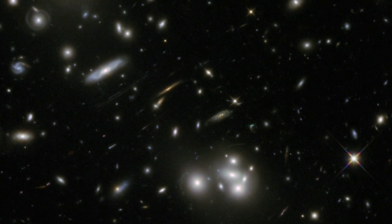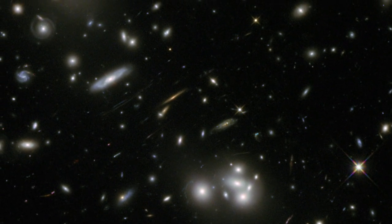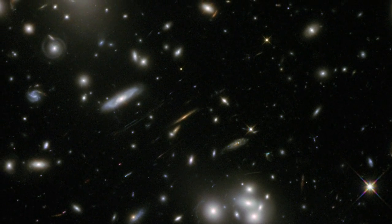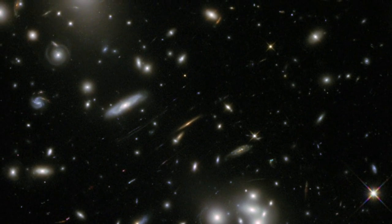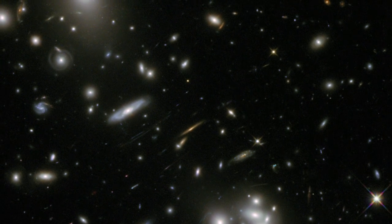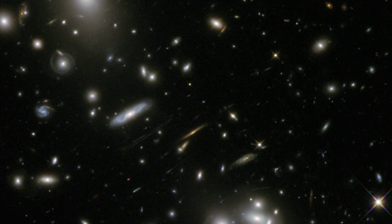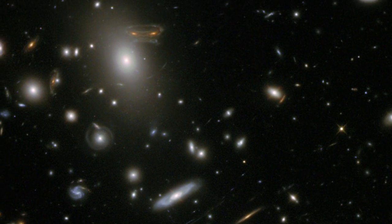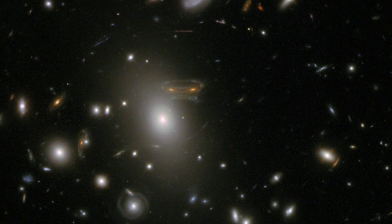Lensing can create weird and amusing shapes. Take Hubble's image of galaxy cluster Abel 68. The central part of this image is distorted and stretched out into streaks by the cluster's lensing effects. But visible in the top corner is a cosmic space invader.